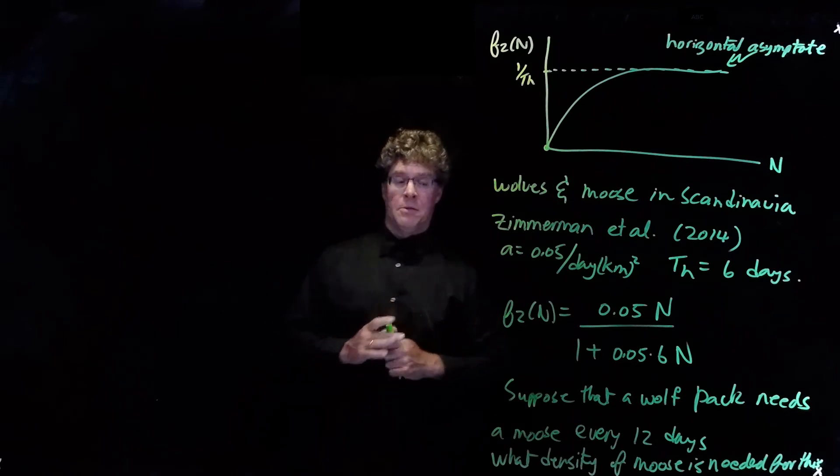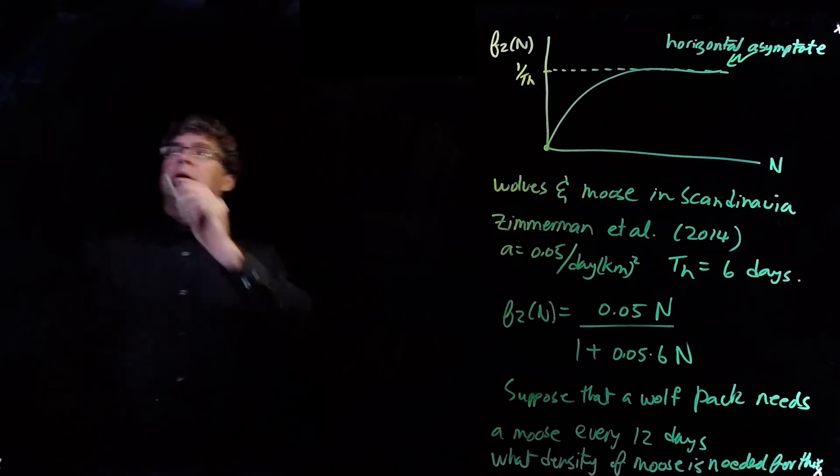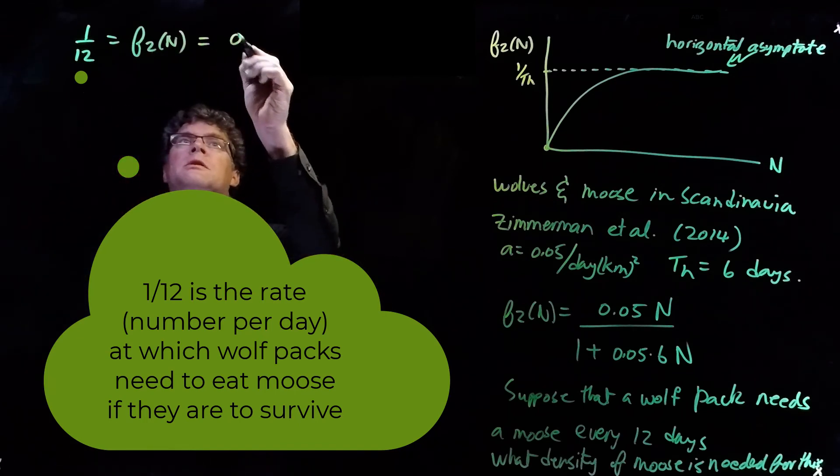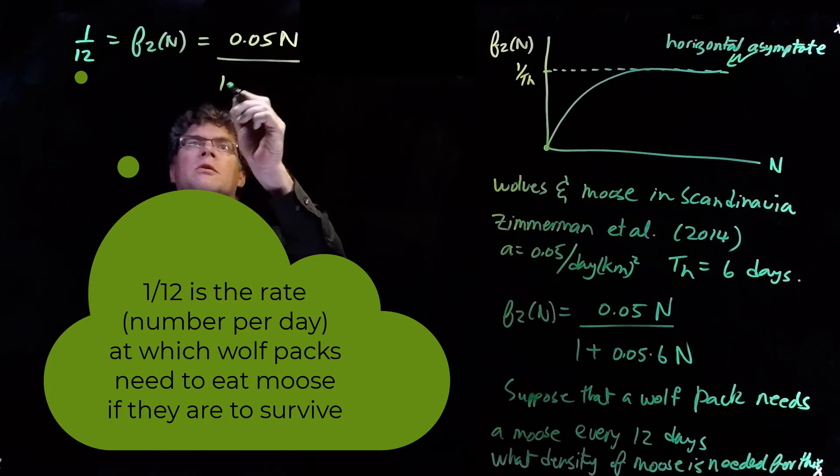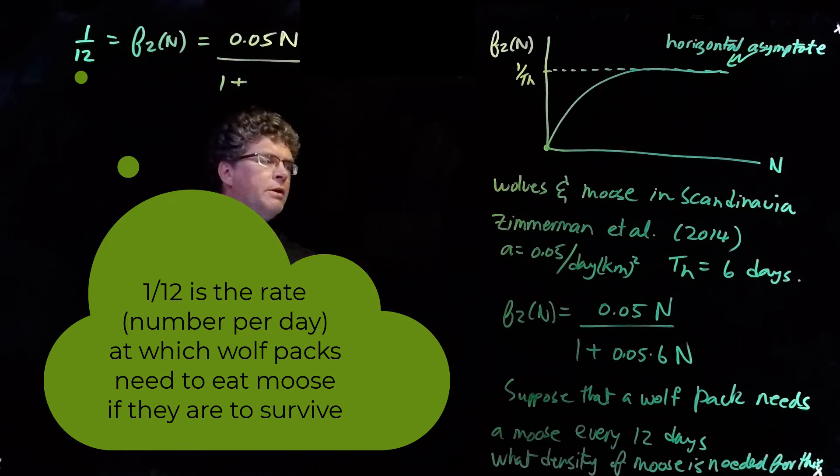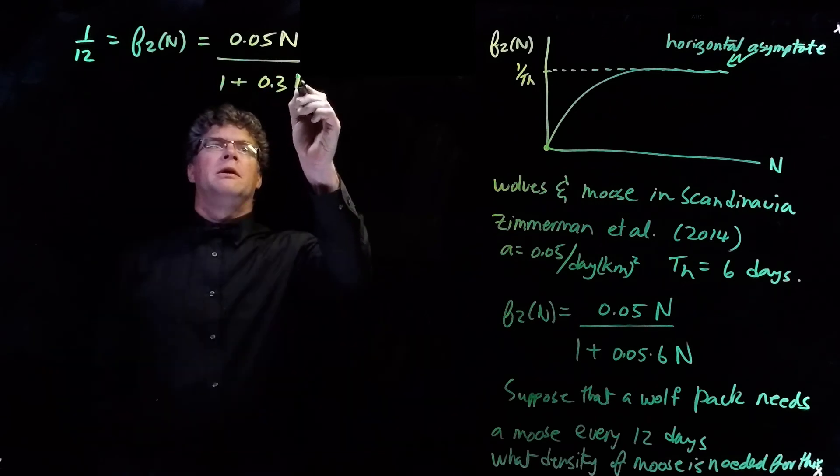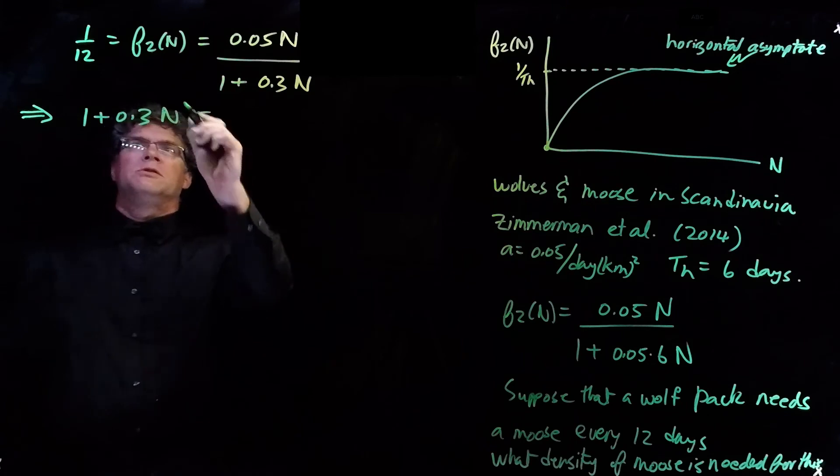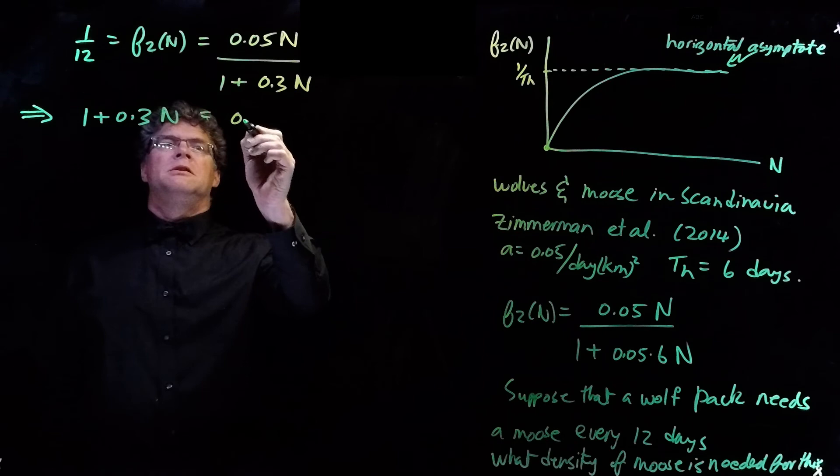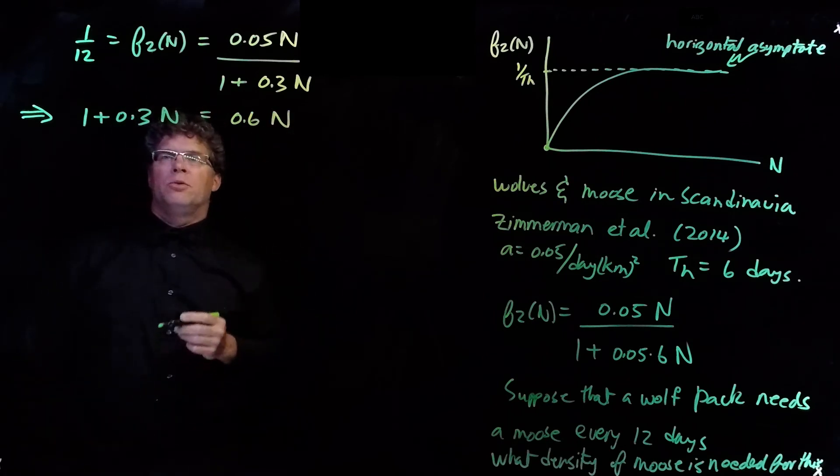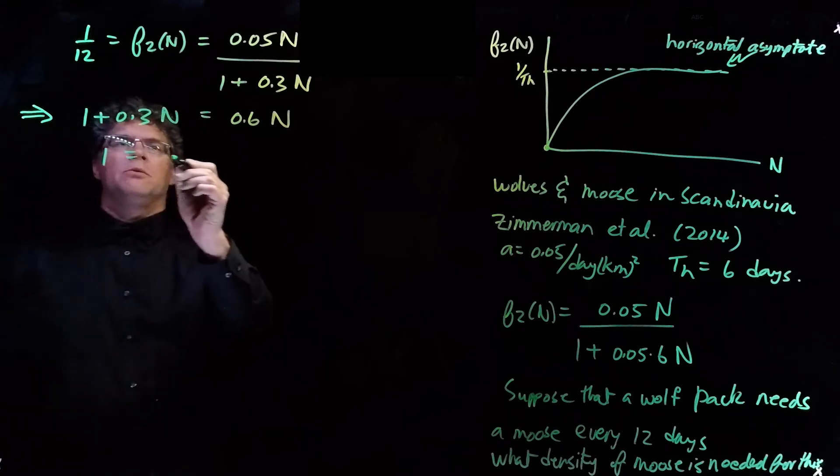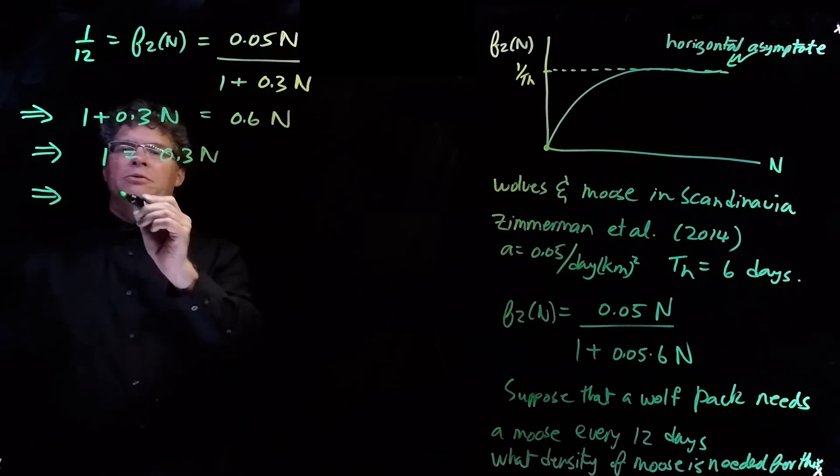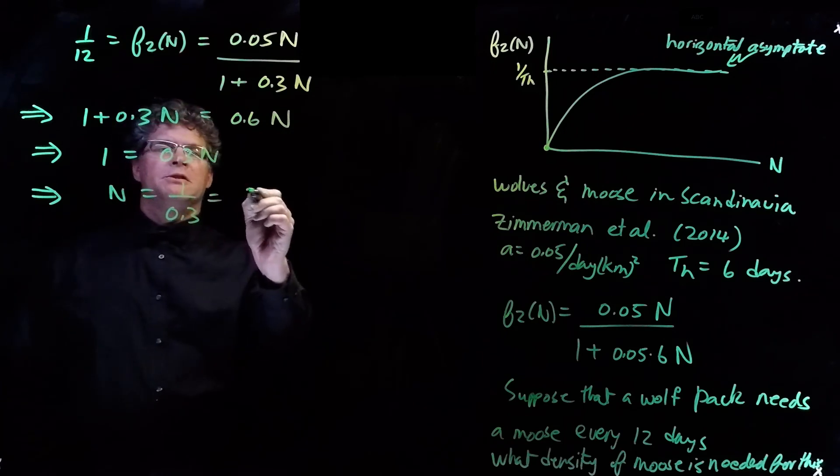So, we use the inverse function approach to answer this question. And so, we know that 1 over 12 is going to be equal to our F2 of n, which is equal to 0.05 n over 1 plus, and I'm going to put the 0.05 and the 6 together and write it as 0.3 n. And so, we can cross multiply. And we get 1 plus 0.3 n is equal to 12 times 0.05, which is 0.6 n. If we subtract 0.3 n from both sides, we get 1 is equal to 0.3 n. And we can divide through by 0.3 to get n is 1 over 0.3, which is 3.33.